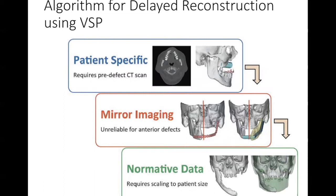We have a hierarchy. If we have a patient's previous imaging, we can use that as a reference for the virtual surgical plan. However, if preoperative imaging is not available prior to defect creation, you can mirror the normal side to the contralateral side. And finally, if no options are available or it's an anterior defect where mirroring cannot be applied, you can use stock images of normative data, which will require scaling to the appropriate size of the patient.